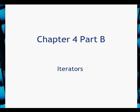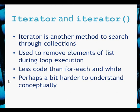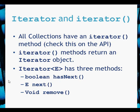Hello, this is a chapter 4 video looking at iterators. Iterators are very much like a foreach and while loop, used to work with collections and search and move through collections. One of the main things they're used for is to remove elements of a list, and it does this very gracefully, as we'll see. A bit less code than a foreach or a while loop, however it may be a bit more complicated conceptually to understand, so hopefully we'll try and make that as easy as possible in this video.